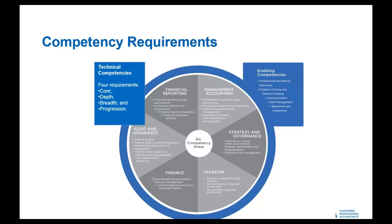We have six technical competency areas: financial reporting, management accounting, strategy and governance, taxation, finance, and audit and assurance. You do not need to achieve competency in all six areas, as I will continue to explain further when I discuss the core depth and breadth requirements. What you do need to meet in full are your enabling competencies — these are more of the softer skills and cover professional and ethical behaviour, problem solving and decision making, communication, self-management, and teamwork and leadership.